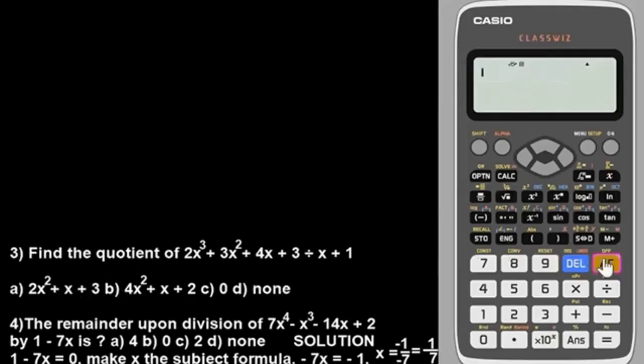Let's check option A. We have 2x² + x + 3. Let's see if that's the answer. The answer is option A. Let's check option B. Let's put 2 here, 4 here. So that's option A.